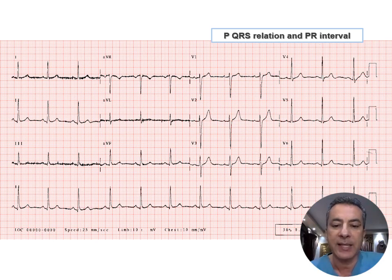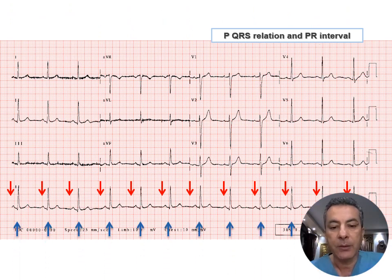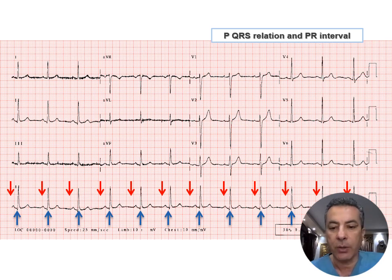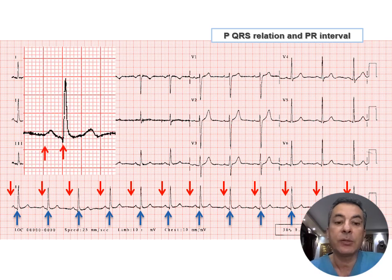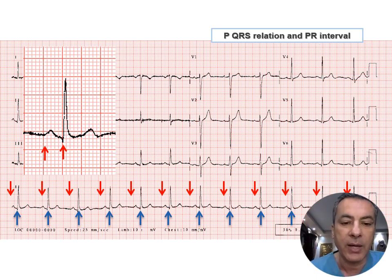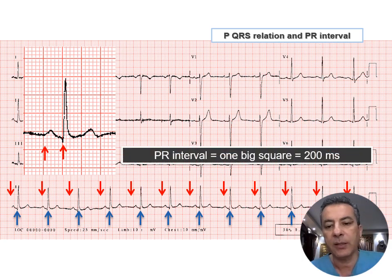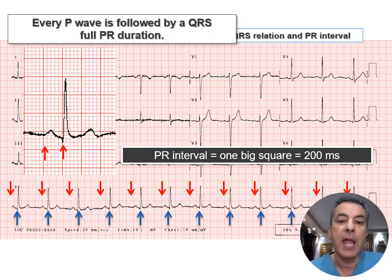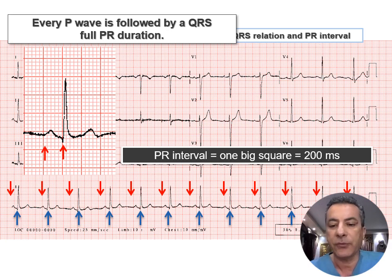Next, we examine the relationship between P and QRS and measure the PR interval. There are regular P waves each followed by a QRS complex, with a fixed relationship between them. Measuring the PR interval from the beginning of the P wave to the beginning of the QRS spans 5 small squares, equaling 200 milliseconds — a full PR interval. The comment: every P wave is followed by a QRS and the PR interval is at the upper limit of normal at 200 milliseconds.